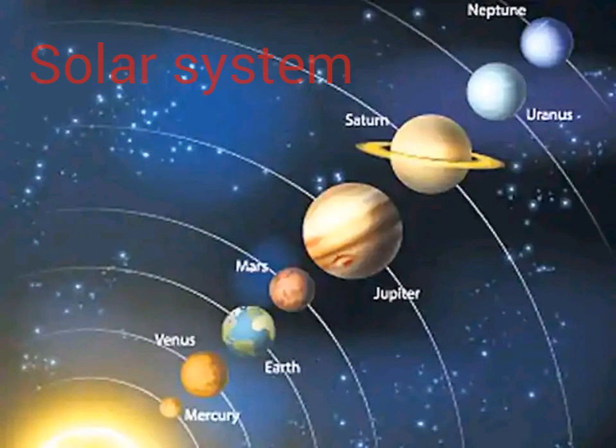Hi students, today we are learning about the solar system. A solar or planetary system consists of a star around which planets revolve. In our solar system, the central star is the sun.